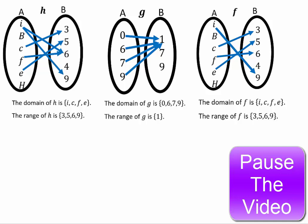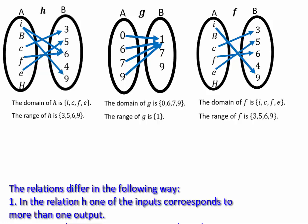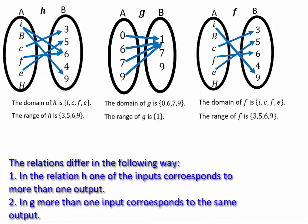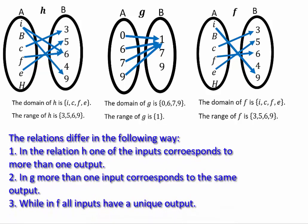Assuming you've come back, let's start with h. You can see in this relation, one of the inputs corresponds to more than one output — like i corresponds to 6 and 9. Whereas in function g, more than one input corresponds to the same output, like 0 and 6 both correspond to 1. But in f, all the inputs have a unique output.